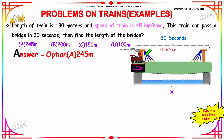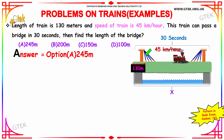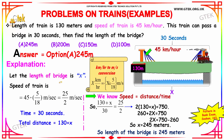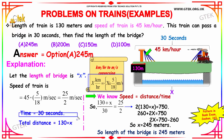The train is crossing the bridge in 30 seconds and the length of the train is 130 meters. The length of the bridge is x. We convert the speed of the train into meters per second using the formula: multiply by 5 divided by 18, giving meters per second. The time is 30 seconds.